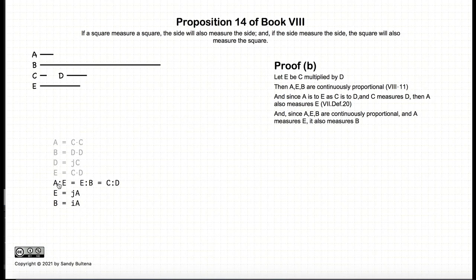But we have that A is to E, A measures E. And if A measures E, then A also measures B. And thus we have shown the second part of this proof.